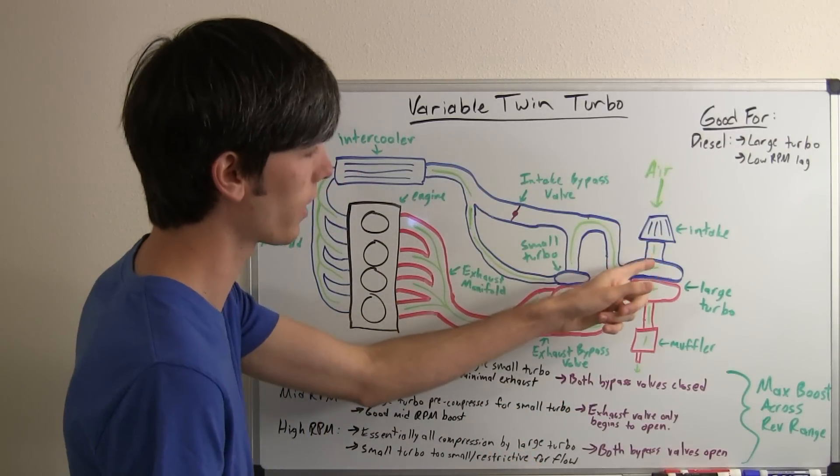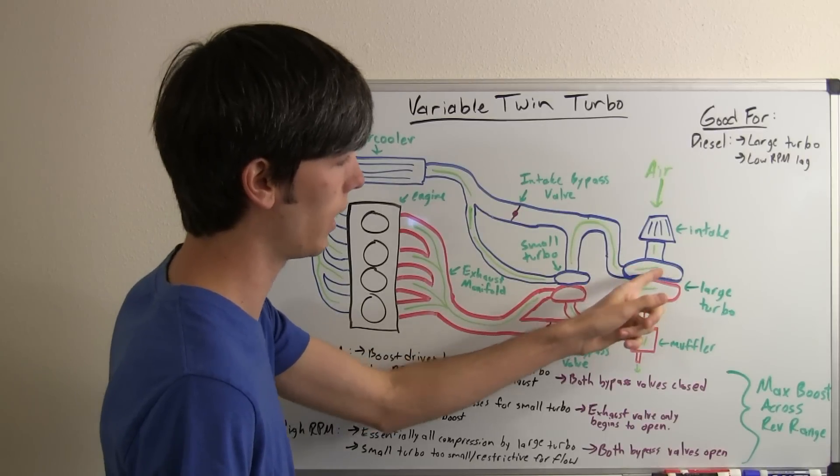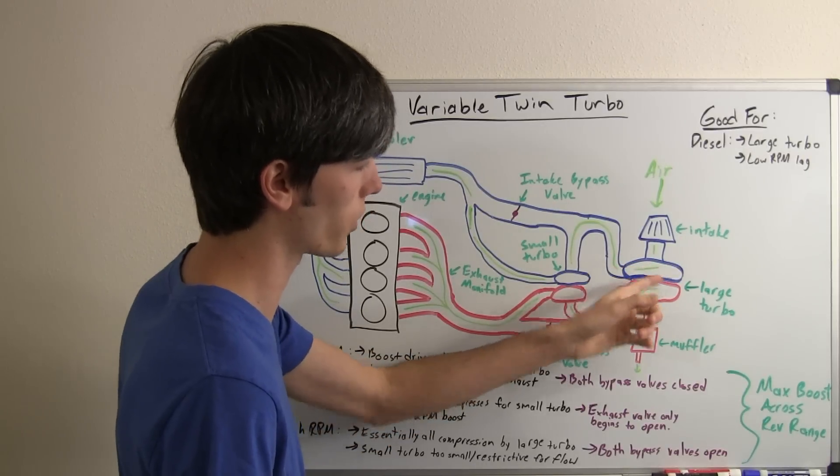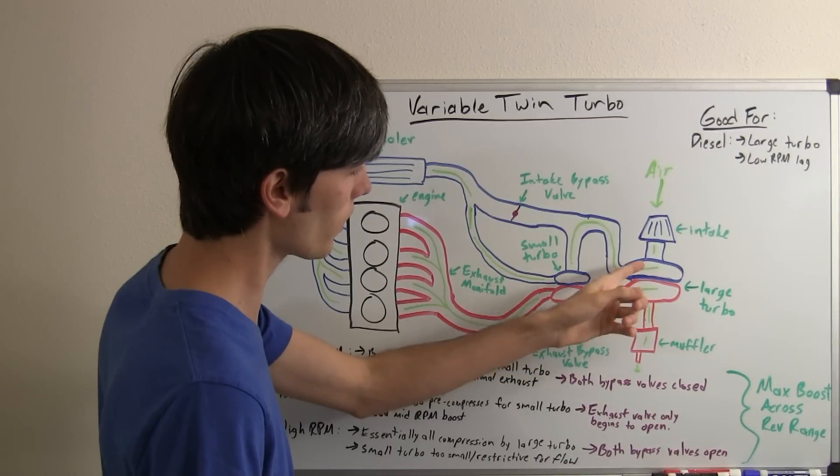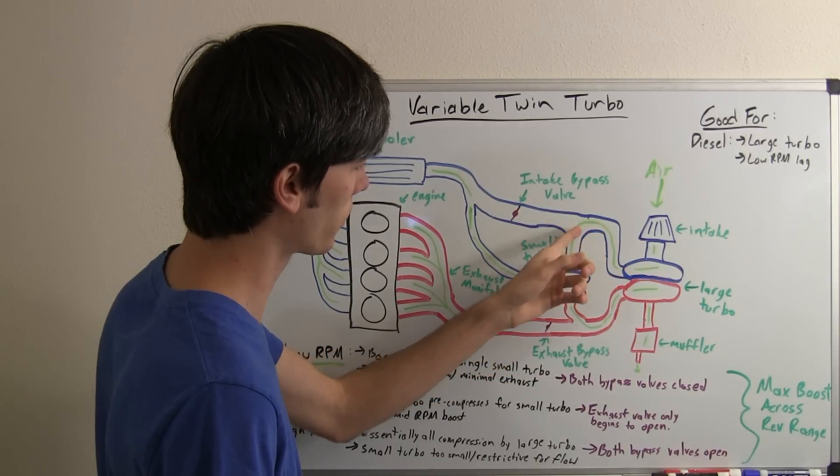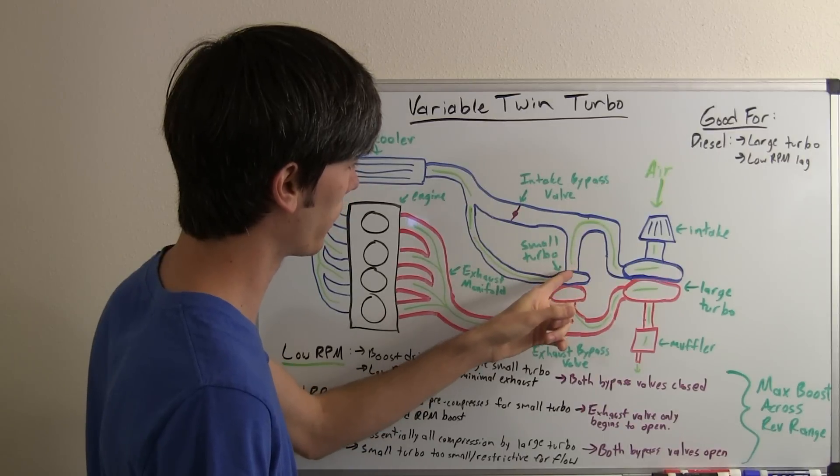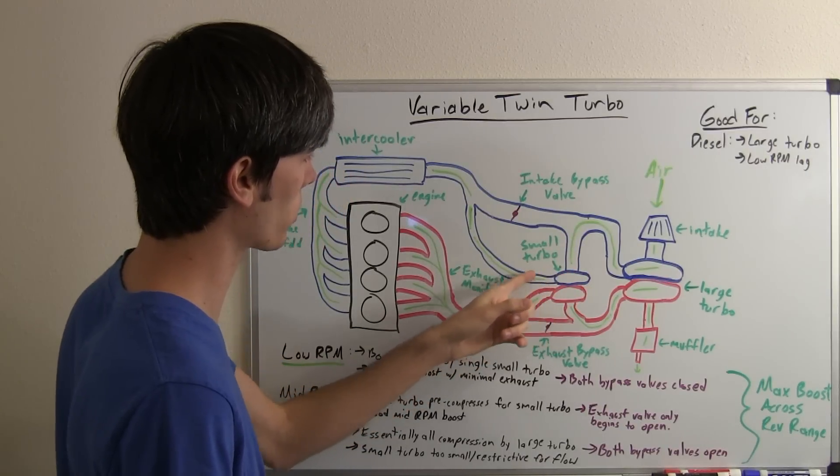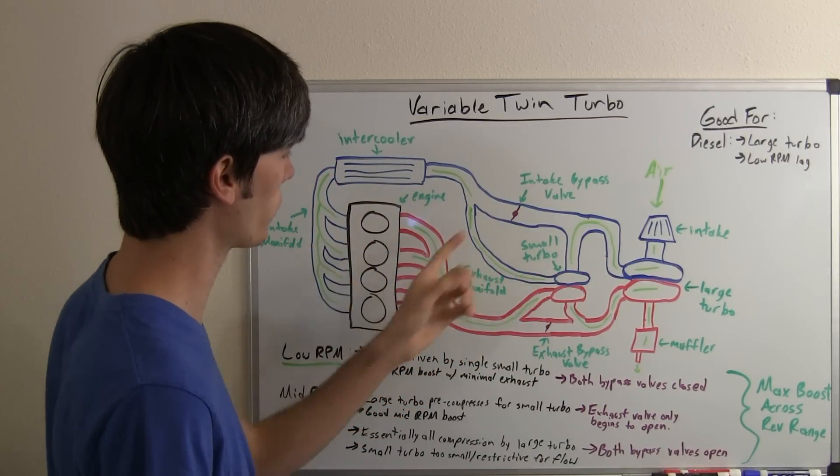Your air is going to come in through the intake. It's going to come through the larger turbocharger which won't be spooling. And then it's going to come through here and it's going to go through your small turbo. That's where it'll compress and then it'll go through the intercooler and into the engine.